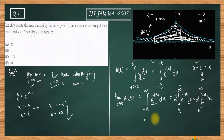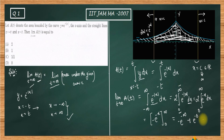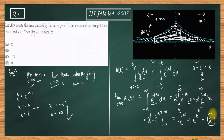Integrating e^(-x) gives -e^(-x), evaluated from 0 to infinity. We get 2 times [-e^(-∞) + e^0] = 2 times [0 + 1] = 2. So the limit as t goes to infinity of A(t) equals 2. Therefore option A is correct and options B, C, and D are incorrect. This is how we proceed in these types of cases. Thank you.